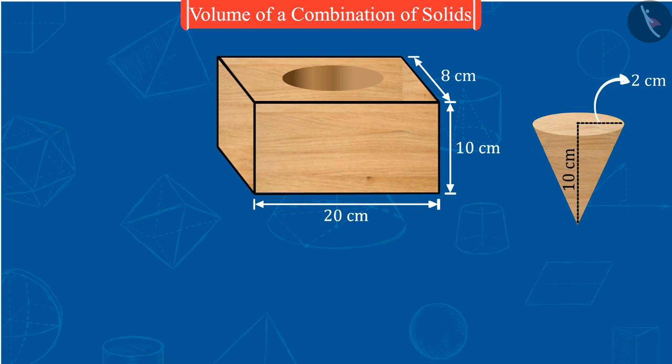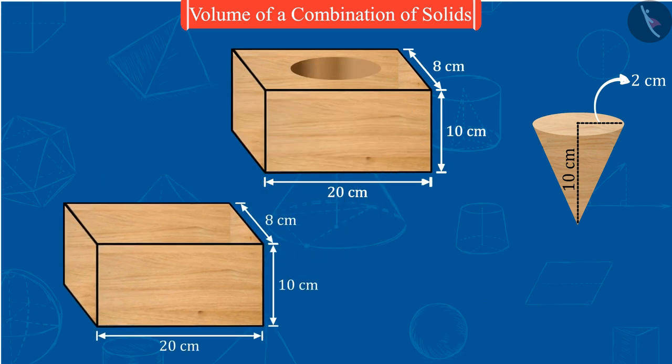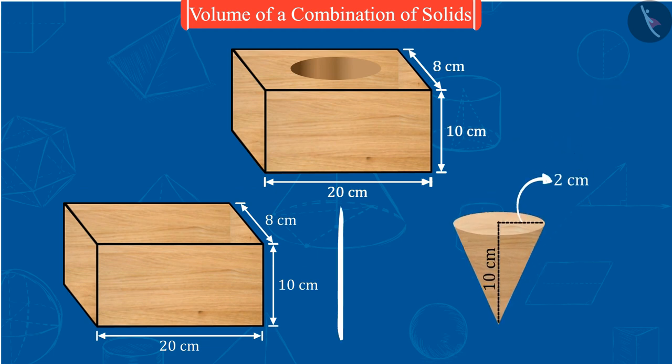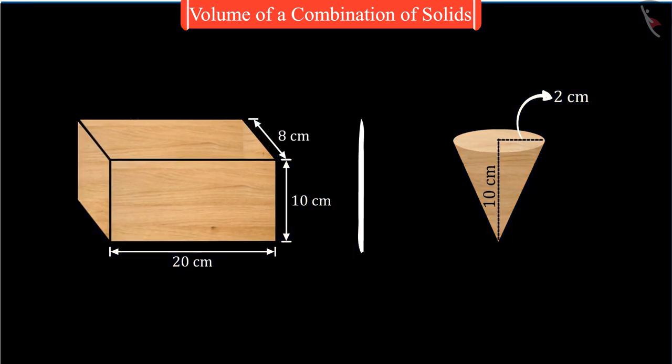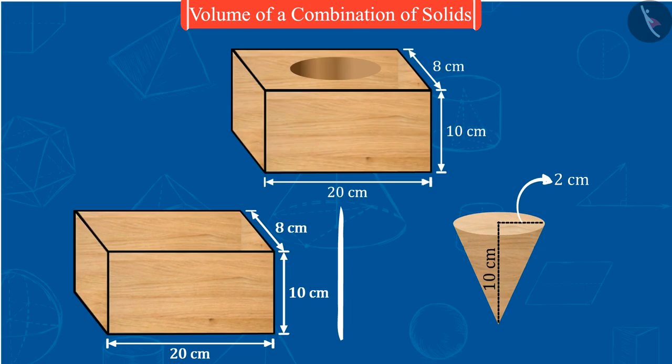We know that this new solid is also formed by a combination of two basic solids, cuboid and cone. But this time, these solids are not joined. So here, we will not find the sum of the volumes of these solids. Since here, one solid is taken out of the other solid.